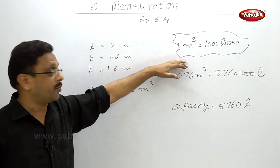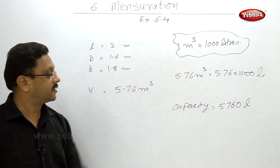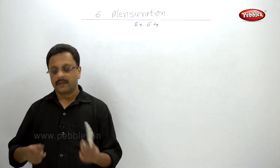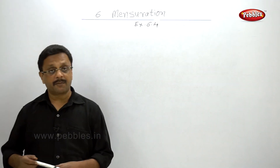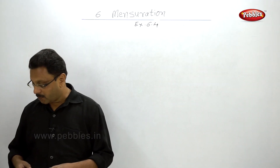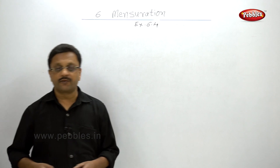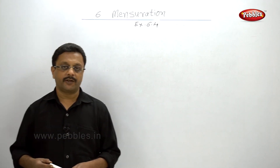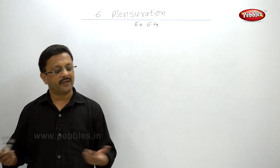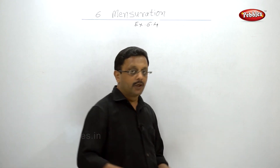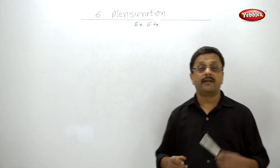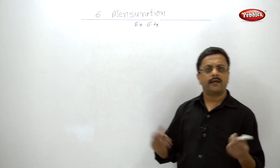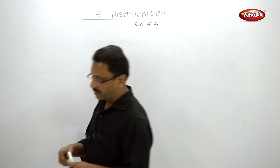Example number 5: the volume of a cube is 1000 cm cube — find its total surface area. Very simple: from the volume of the cube you find the length of one side, and then you use the formula for total surface area.